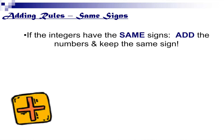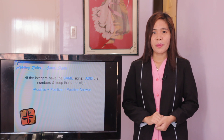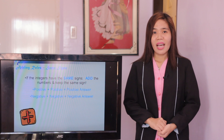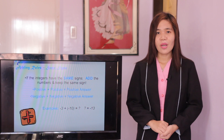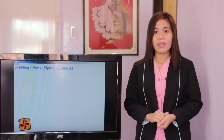Let's start with addition. Adding rules with the same sign: if the integers have the same sign, add the numbers and keep the same sign. Positive plus positive equals a positive answer. Negative plus negative equals a negative answer. Examples: negative 3 plus negative 10 equals negative 13. Positive 6 plus positive 8 equals positive 14.